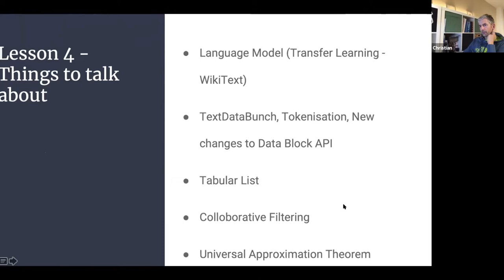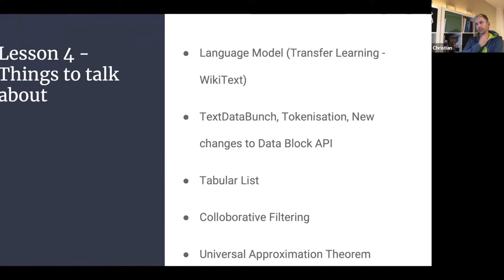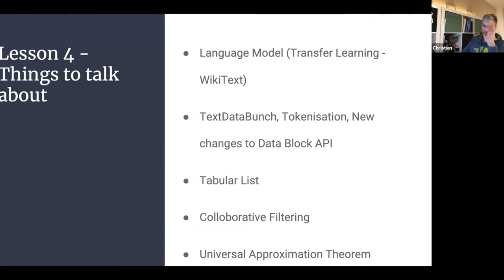One participant said this was probably the best lesson yet because it covers really new material — tabular data and NLP transfer learning. The image stuff is nice, but NLP transfer learning is something they were really looking forward to. Unfortunately, text datasets are harder to build yourself compared to image datasets. Running the IMDB notebook was also very slow — it took around four hours on GCP.